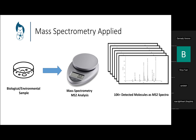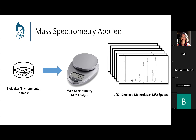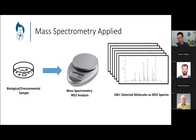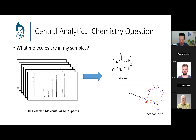We have a full molecule — we weigh the intact molecule without breaking it, called the precursor mass — and then we fragment it and end up with a set of fragment masses. In computer science terms, this is a set of tuples of mass and intensity. We call this the tandem mass spectrum, or the MS/MS spectrum, or the MS2 spectrum.